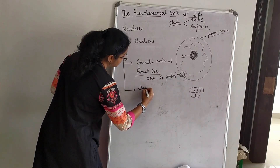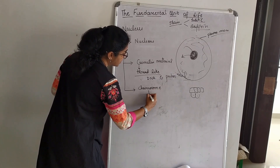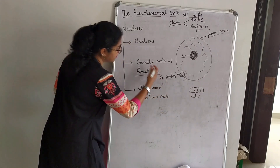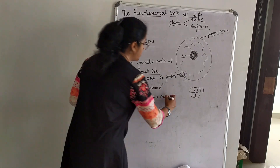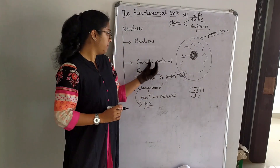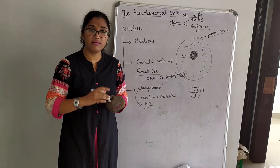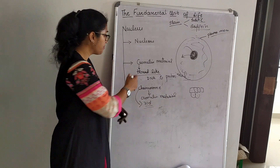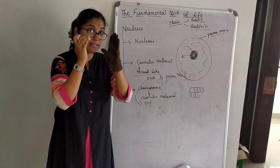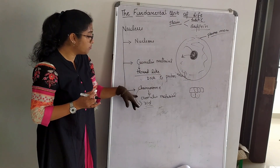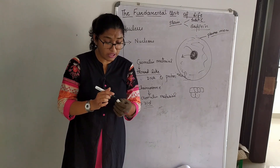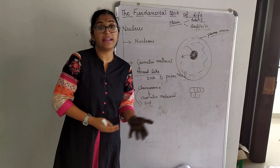Chromosomes are made of chromatin material and are rod-like structures. The main role of chromosomes is to inherit characters from parents to offspring. Chromatin material is thread-like in shape, while chromosomes are rod-like. We will study more about this in the later part of the lesson when we cover cell division.